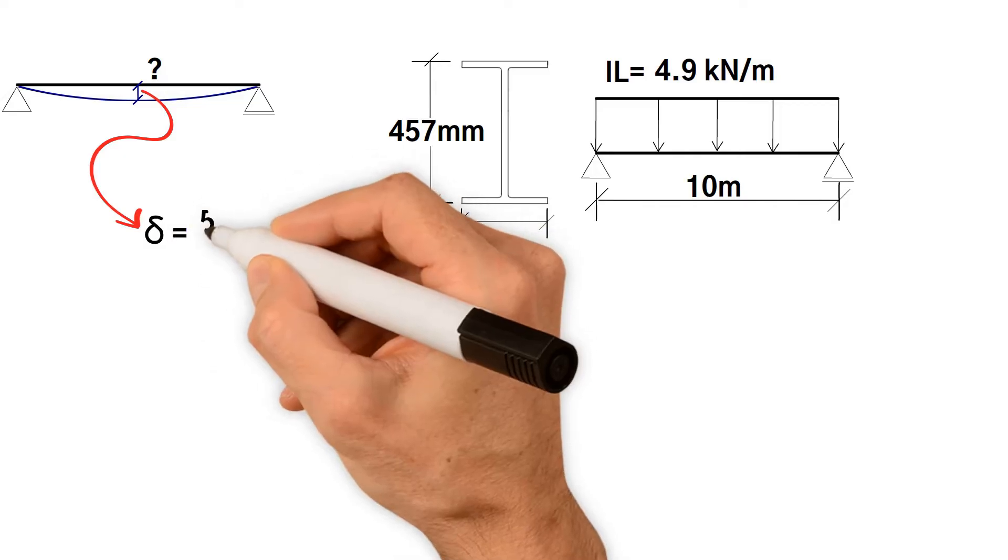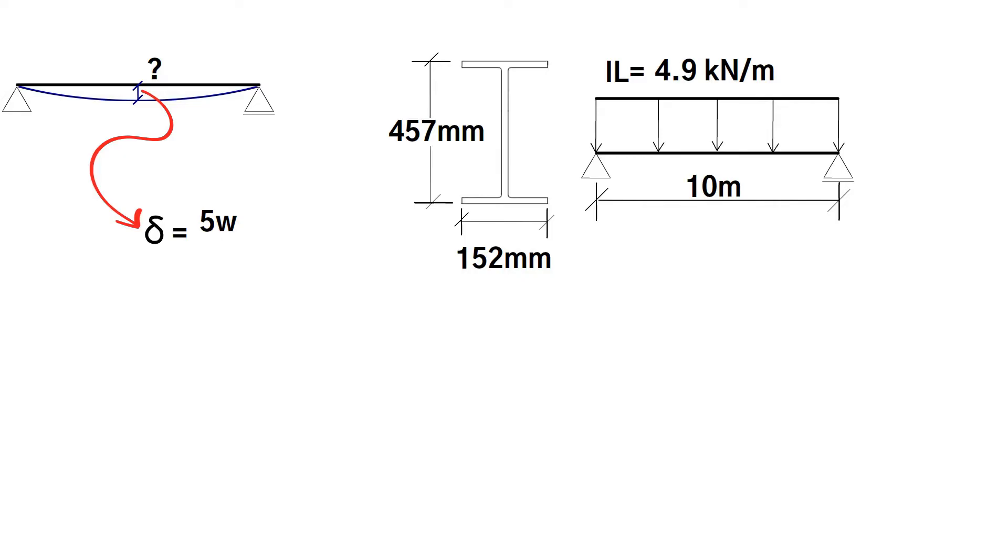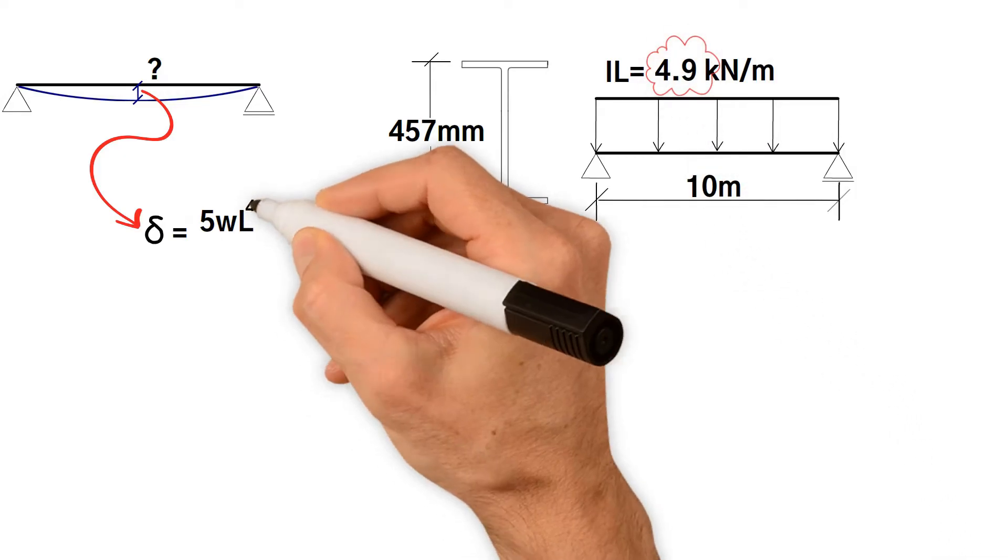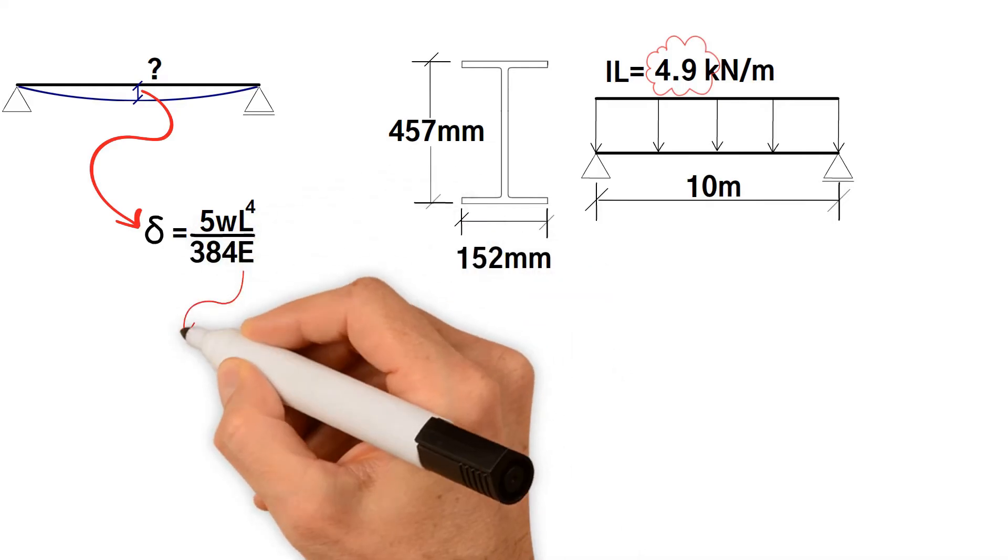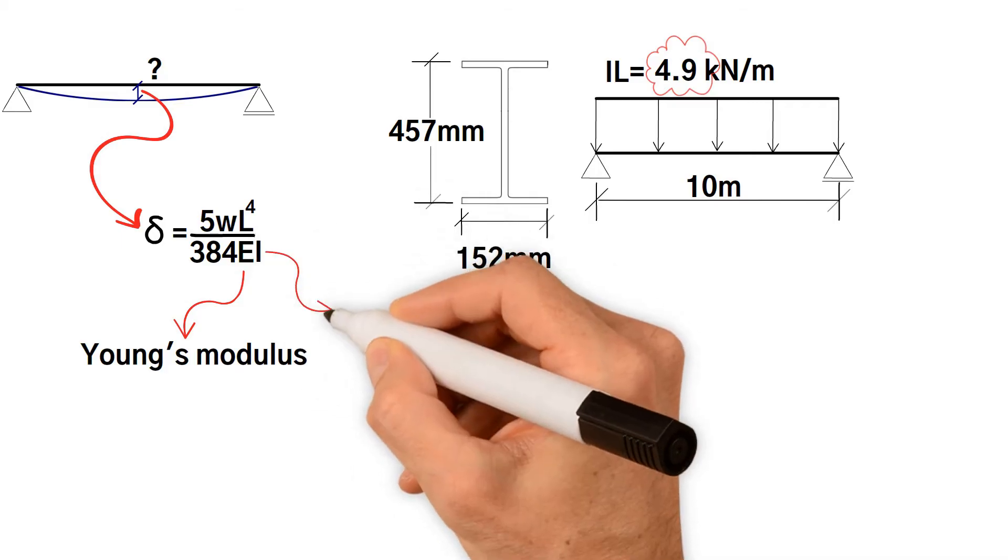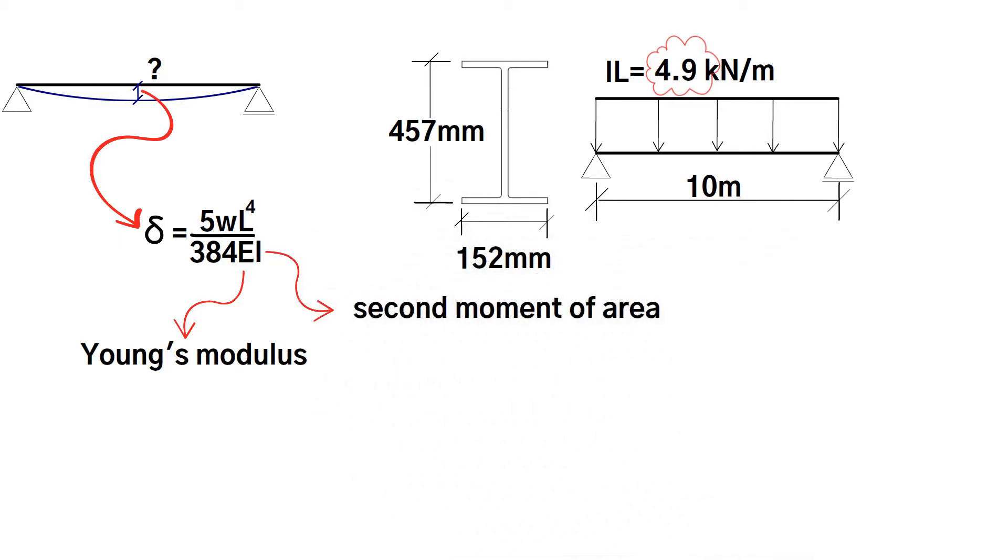Let's begin with 5 times W which is that load. W equals 4.9 kilonewton per meter times L to the 4, over 384 times E, which is the Young's modulus, times I, which is the second moment of area of the steel beam.